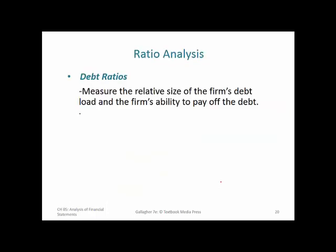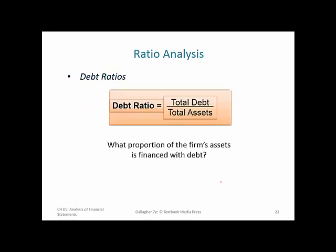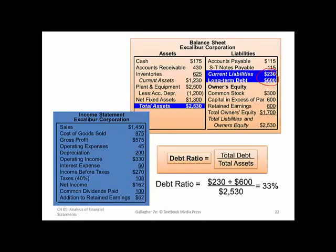Debt ratios measure the relative size of the firm's debt load and ability to pay it off. The basic debt ratio is total debt to total assets. Total debt is the sum of current and long-term liabilities — $230 million plus $600 million — divided by total assets, giving a relatively low 33%. A benchmark: if this ratio approaches one, you're financing the whole operation with debt, which signals over-leverage and high risk.